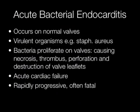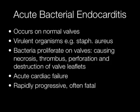Acute bacterial endocarditis occurs on normal heart valves. The organisms are virulent, such as Staph aureus. The bacteria proliferate on the valves causing necrosis, thrombus, perforation and destruction of the valve leaflets. This causes acute cardiac failure and is rapidly progressive and often fatal.